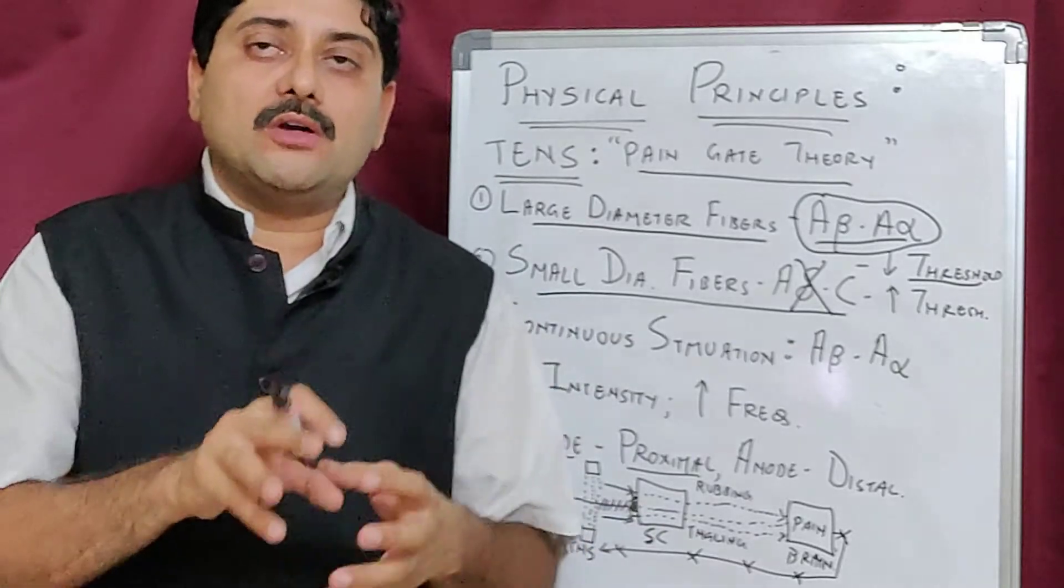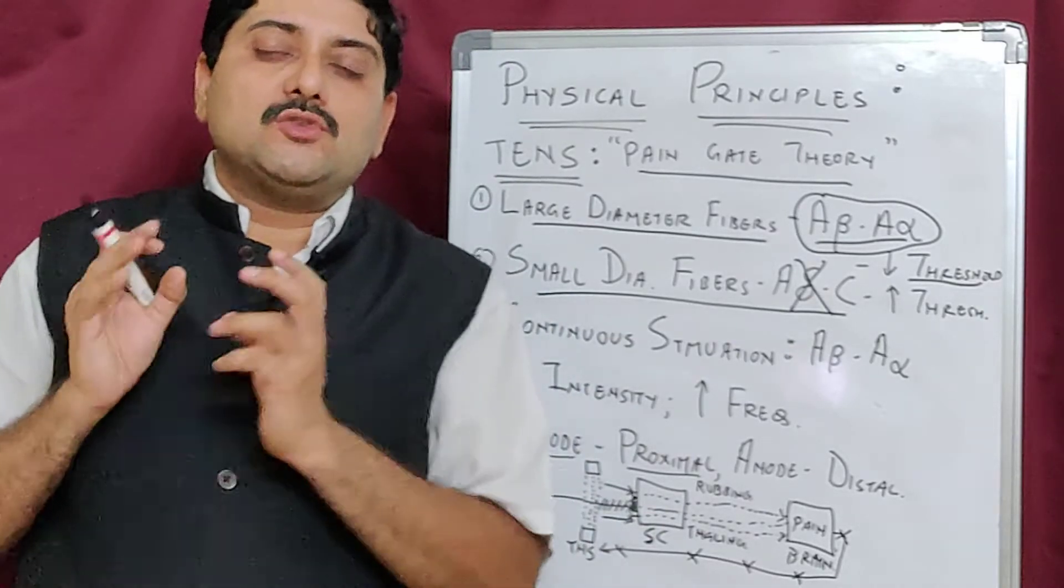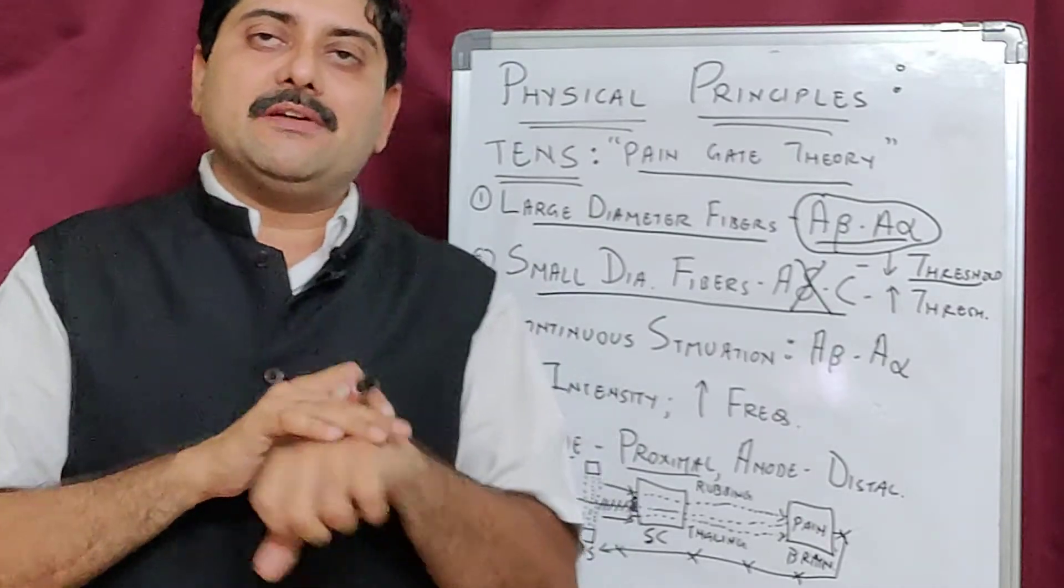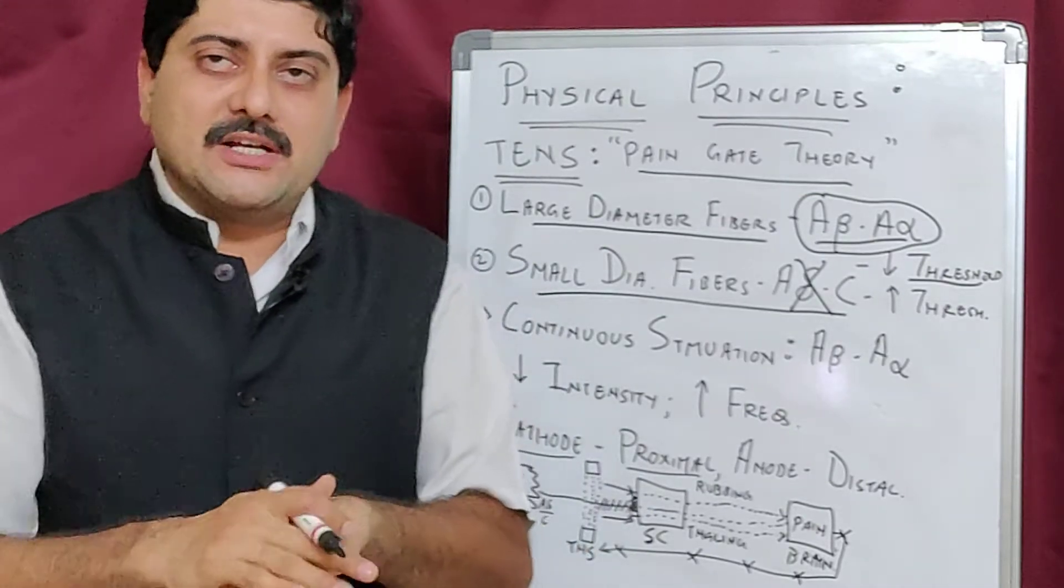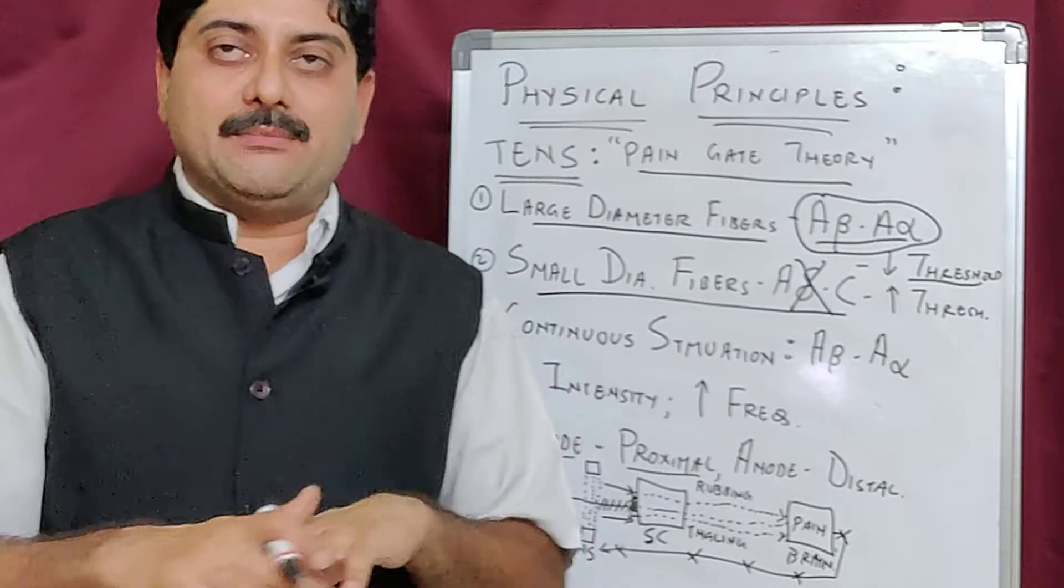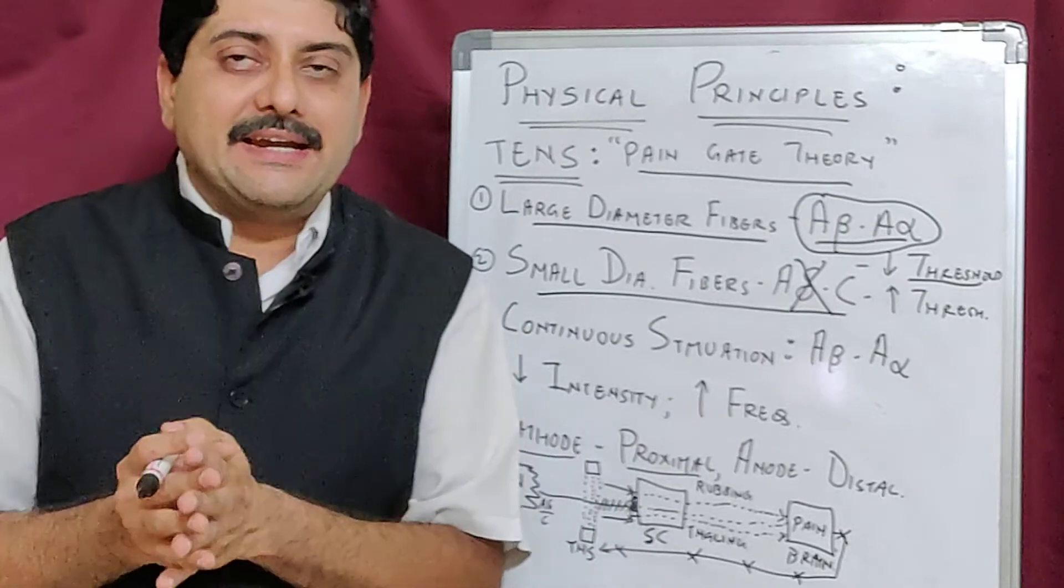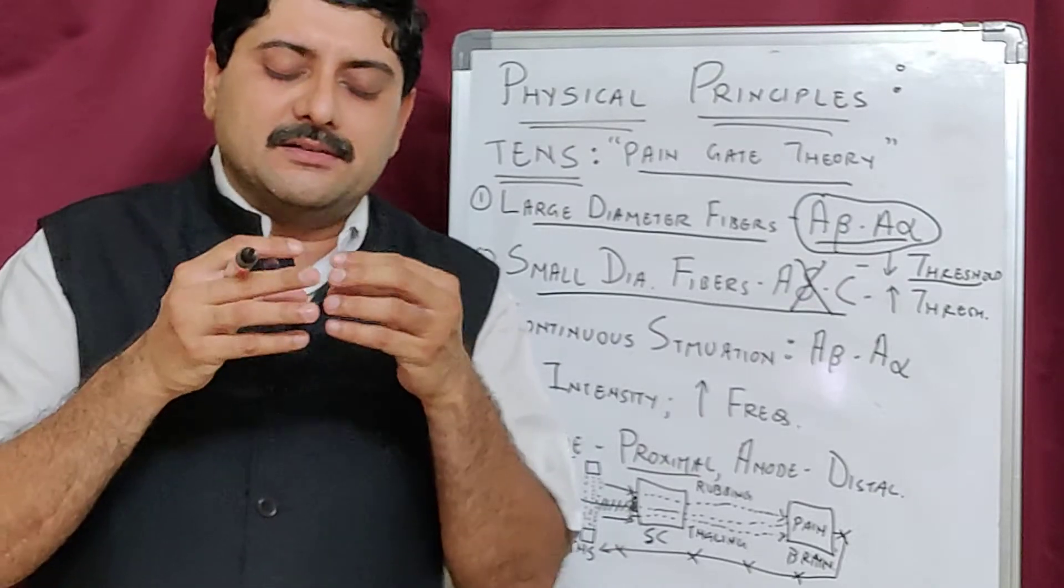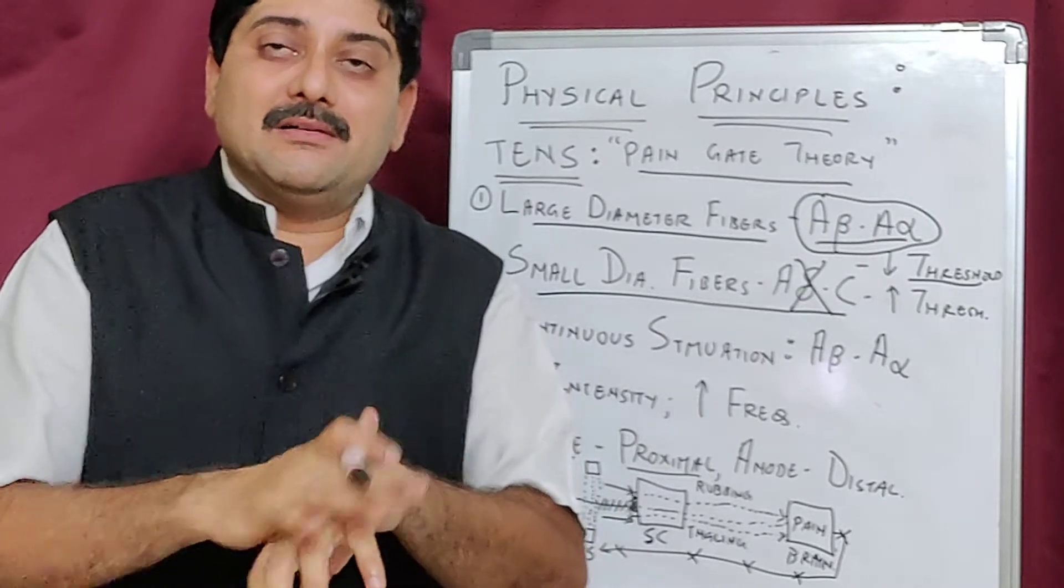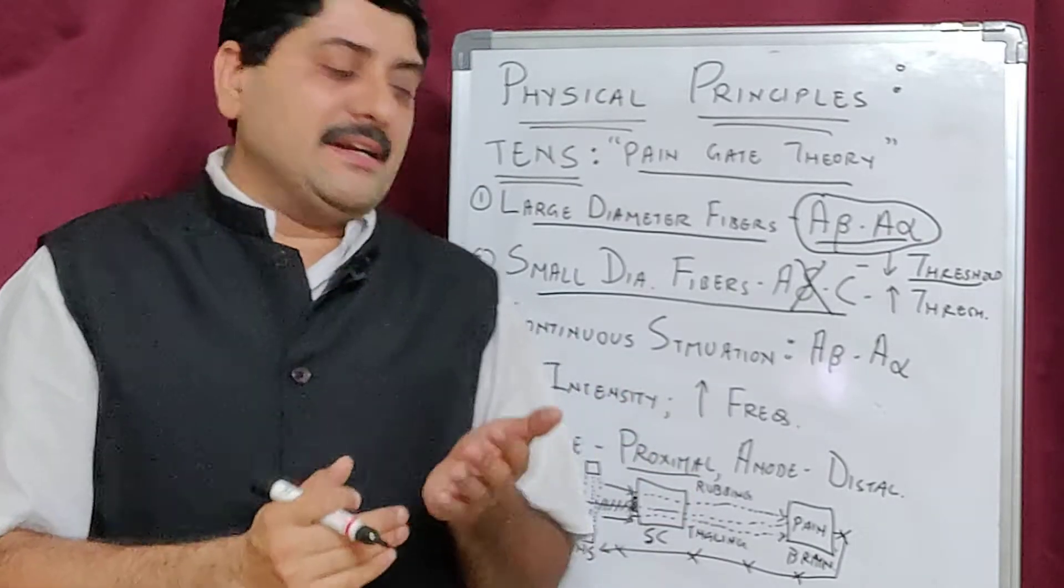They do not allow the sensation to cross the spinal cord and go to the brain and report that there is something. The brain basically feels the rubbing action when you are applying rubbing action or TENS, which is equal to this counter-irritation method.